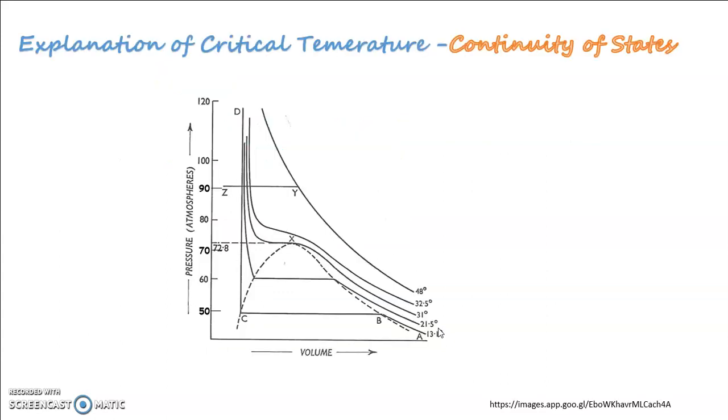The importance of critical temperature of a gas was first discovered by T. Andrews in his experiments on pressure-volume relationship or isotherms of carbon dioxide gas at a series of temperatures. These isotherms are shown here. Consider the first isotherm at the lowest temperature 13.1 degrees Celsius. The point A represents carbon dioxide in the gaseous state occupying a certain volume and a certain pressure. On increasing the pressure, its volume diminishes as indicated by the curve AB.